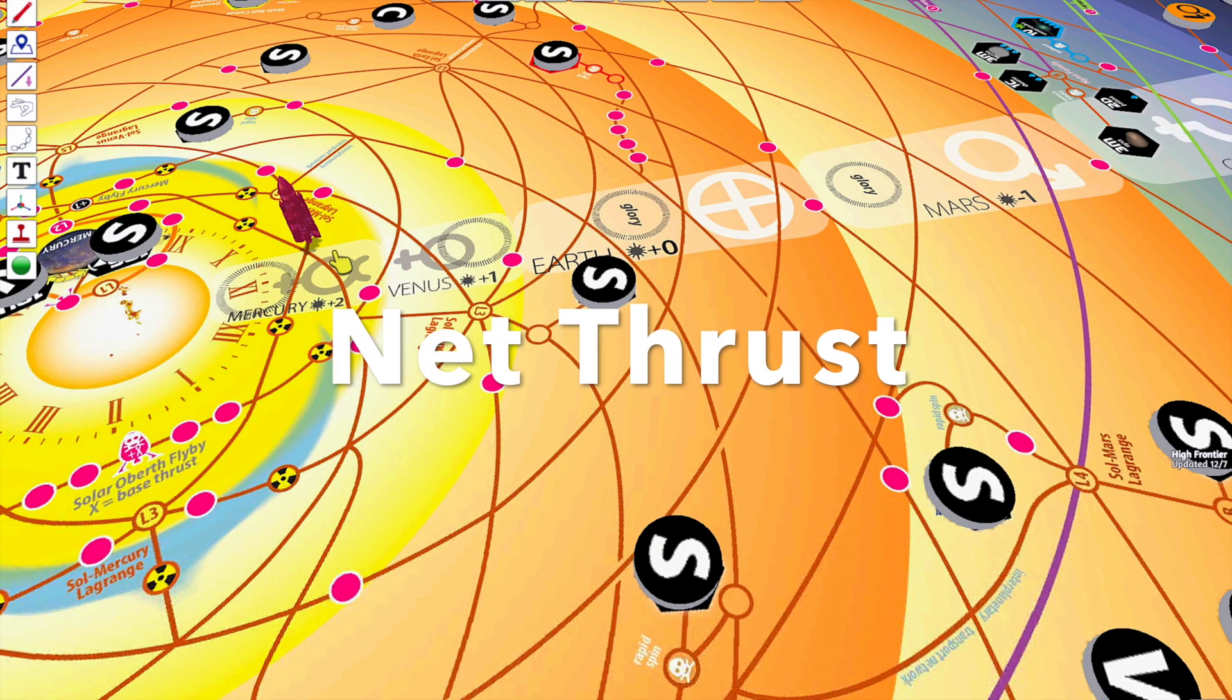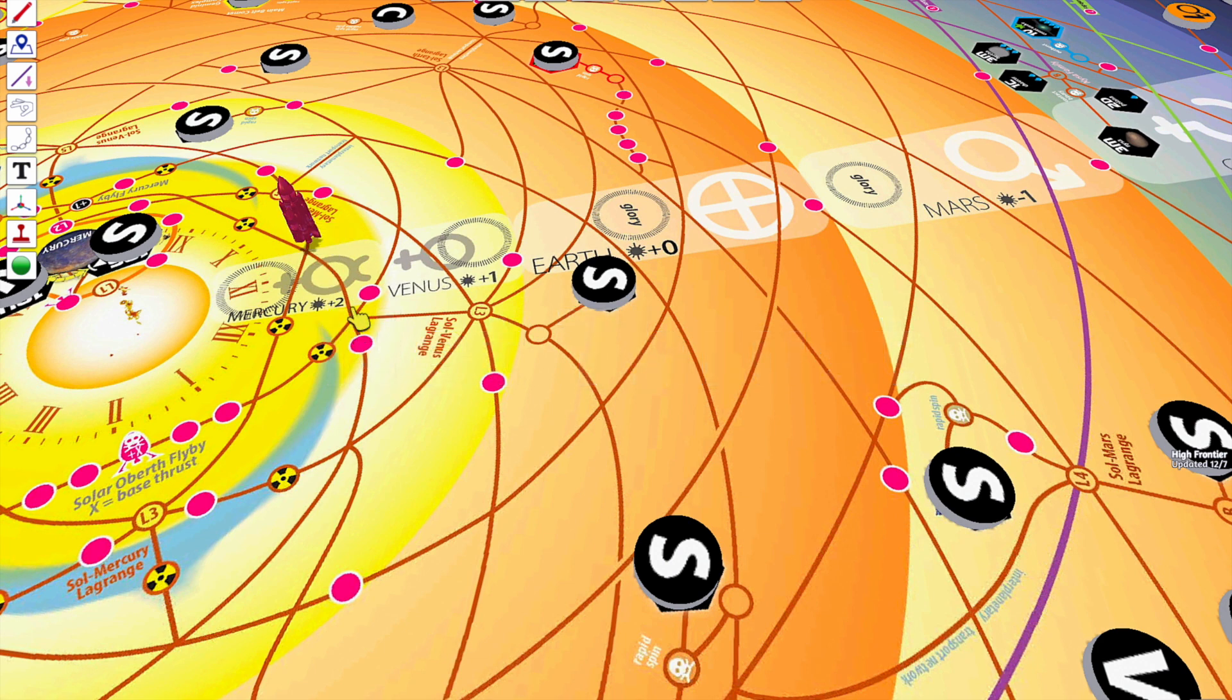Each turn, the net thrust of your solar sail starts at 2. It is modified higher up to 4 if you start close to the sun, or reduced down to 1 or less if you start in Mars. If you start further out, it's 0.